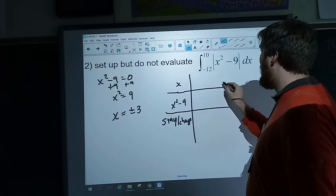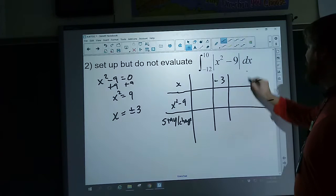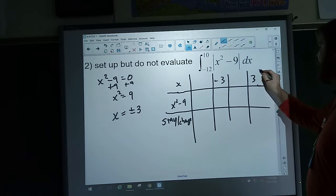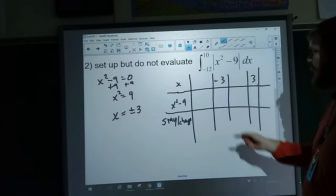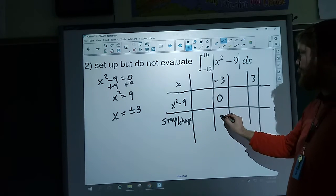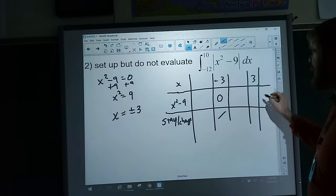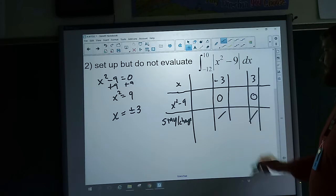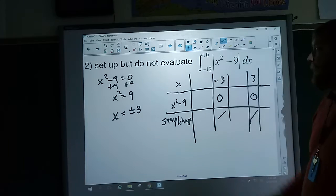So up here I'm going to put my x values, and I already know that negative three and three are going to be my switching over points, because when I plug in negative three I get a zero inside there. That's kind of like not really paying attention to staying or changing there. Those are switching over.